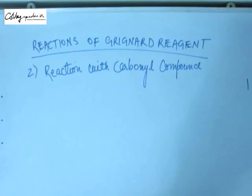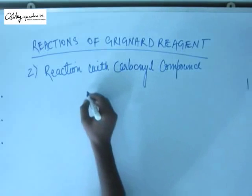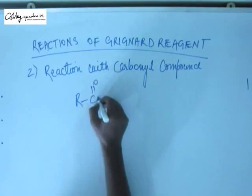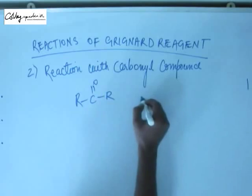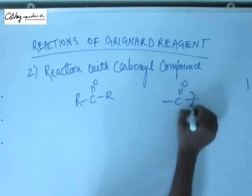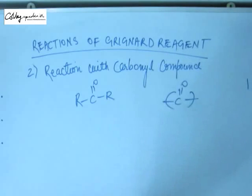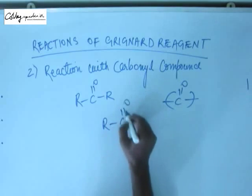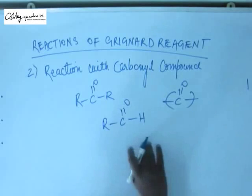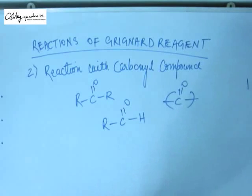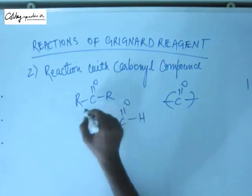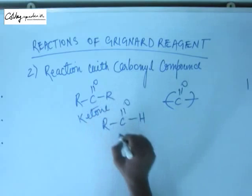The second important reaction of Grignard reagent is with carbonyl compounds. Carbonyl compounds are those having a carbonyl group — a C double bond O. On both sides of the carbonyl carbon, you can have hydrogen or an alkyl group. If you have at least one hydrogen on one side, it is called an aldehyde; if you have R groups on both sides, it is called a ketone.